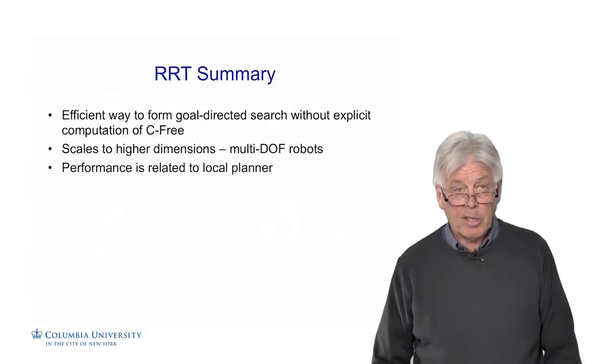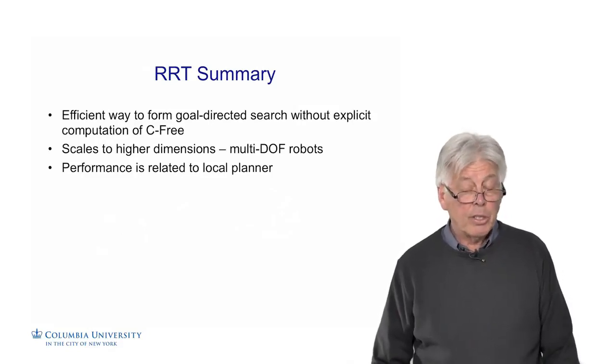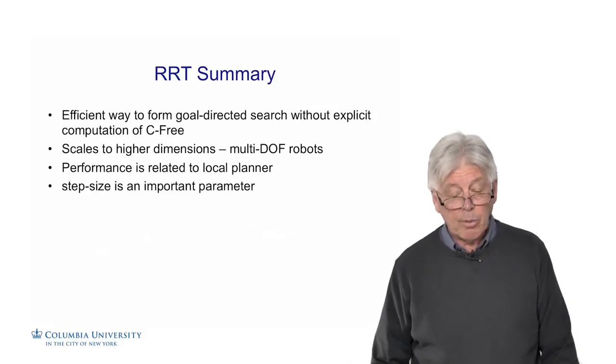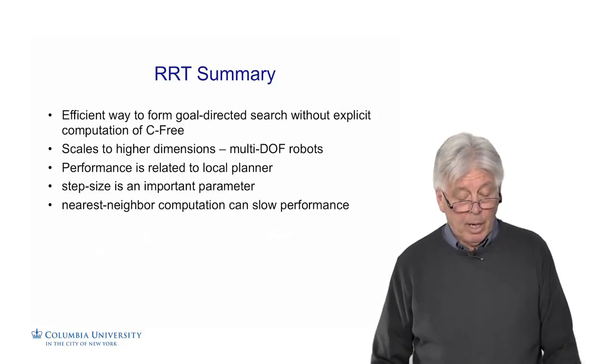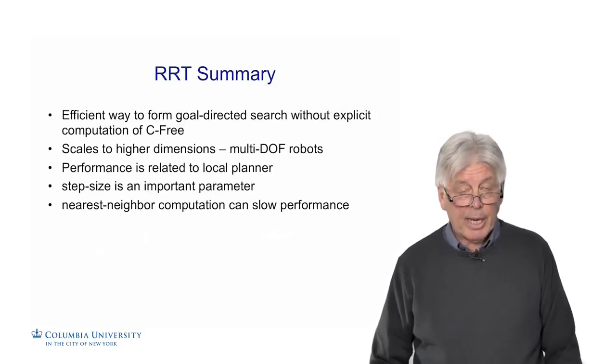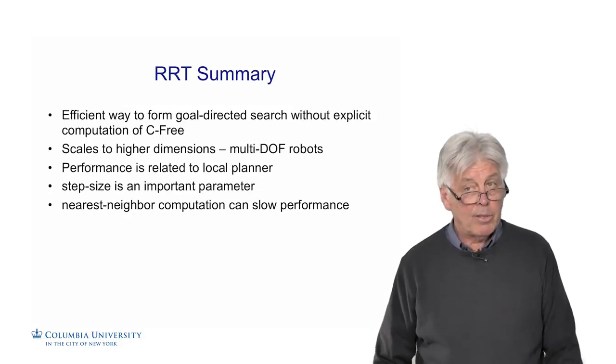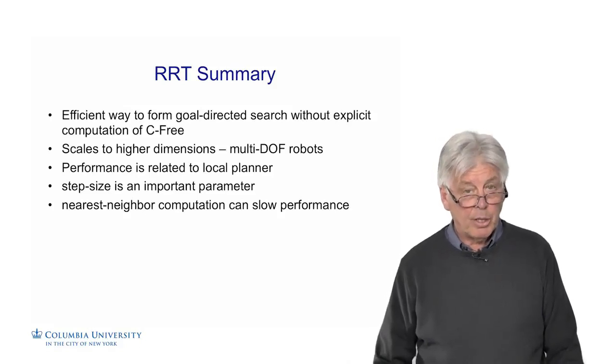The performance is somewhat related to the local planner, because every time we get two configurations, we do have to check to see if there's a collision between them, and that can take time. The step size is another important parameter, which affects how far the local planner has to search. The nearest neighbor computation can slow performance, because as you can see from some of these RRTs, you have thousands and thousands of nodes. Nearest neighbor becomes an important computation. You have to find the nearest neighbor efficiently.